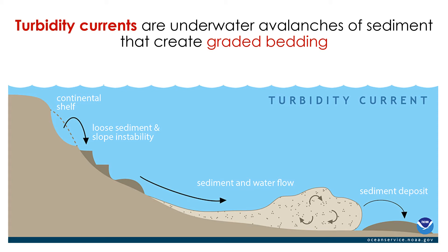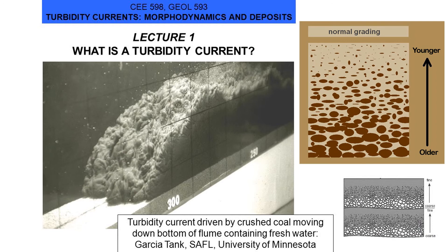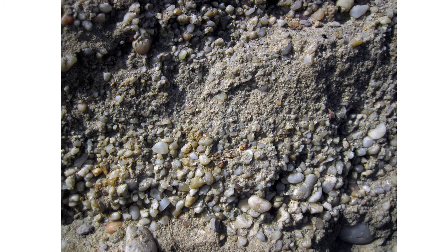Graded beds are created by turbidity currents. Turbidity is the presence of sediment in water; the higher the turbidity, the more sediment is present. You can think of a turbidity current like an underwater avalanche of water and sediment. The avalanche will move downslope and deposit sediment at the bottom. The turbidity current loses its energy and the sediment falls out of the water. The largest, heaviest grains are the first to fall out of suspension and are deposited on the ground first. Smaller grains, which have more buoyancy and require less energy to move, remain in the water longer before they ultimately settle on top of the larger grains.